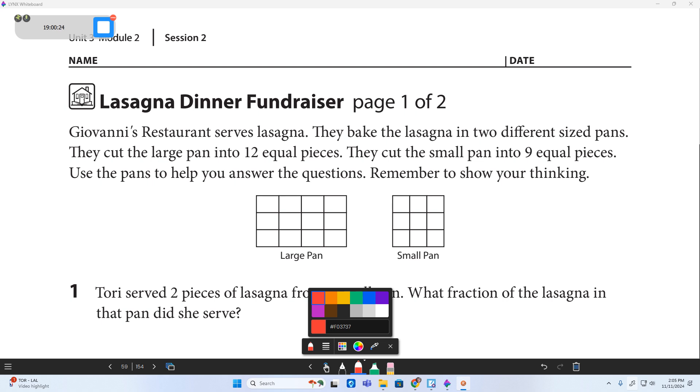They bake the lasagna in two different size pans. They cut the large pan into 12 pieces, and you can see that right there. There's the large pan in 12 pieces. They cut the small pan into nine pieces, and you can see that right there. Use the pans to help you answer the questions. Remember to show your thinking. So I'm going to probably use a lot of drawings. I find drawing a picture for fraction problems to be a very powerful thing.